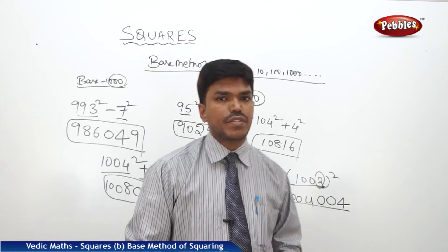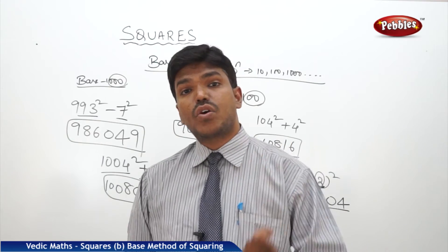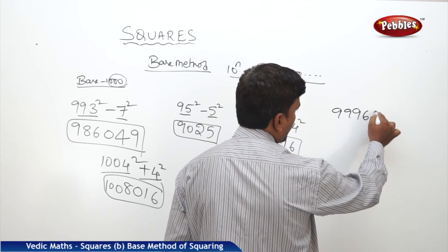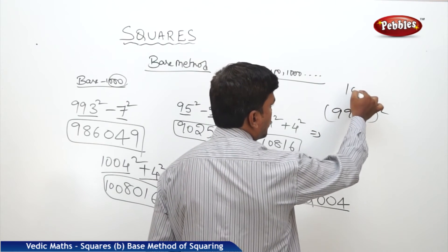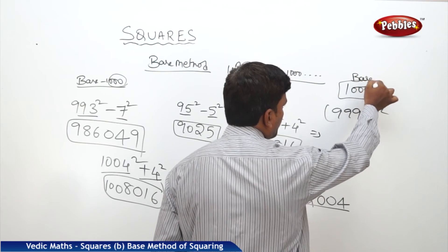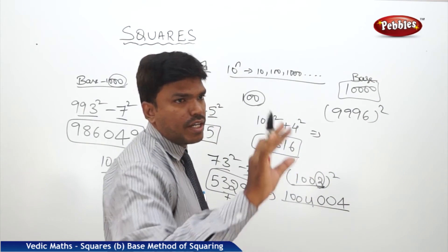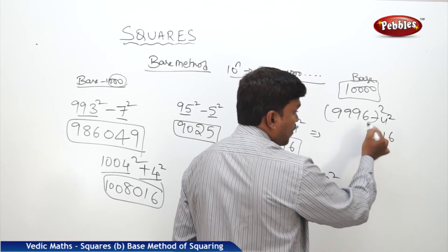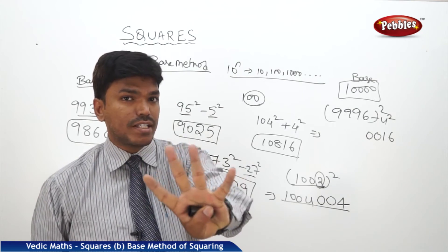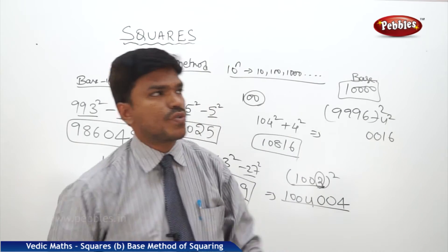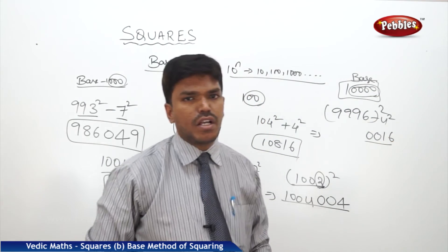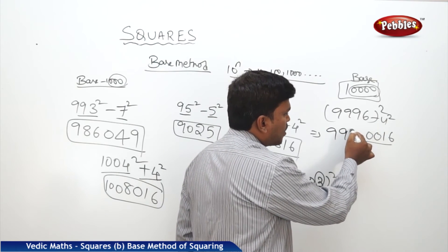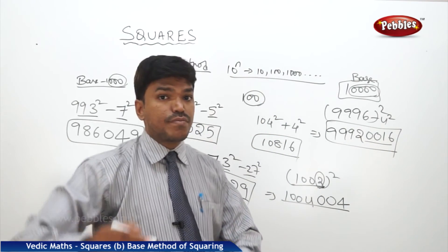What about base 10,000? It doesn't matter — we can easily calculate. Suppose I need 9996 squared. The base is 10,000. Compare 9996 with 10,000 — it is 4 less. What is 4 squared? 16 — but write it as 0016, because the right side part must have 4 digits since there are 4 zeros in 10,000. The left side part: 9996 minus 4 is 9992. So the answer is 99920016.